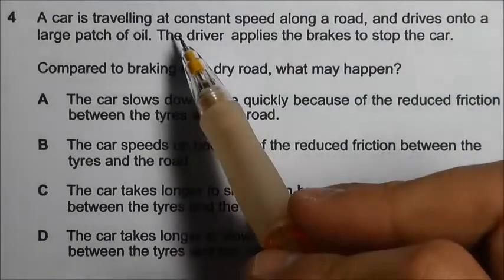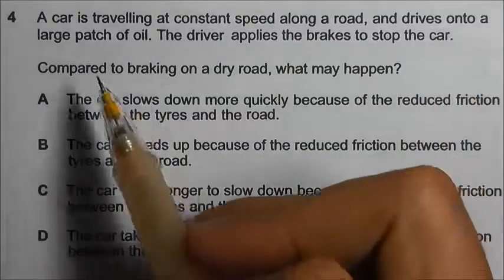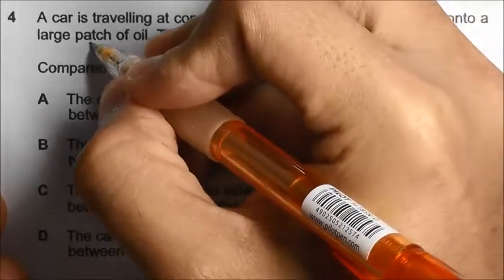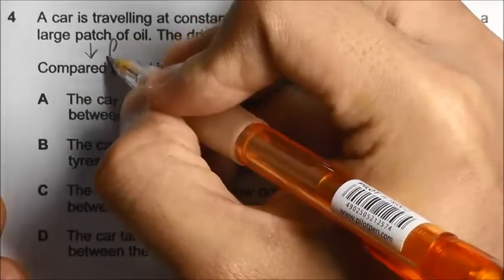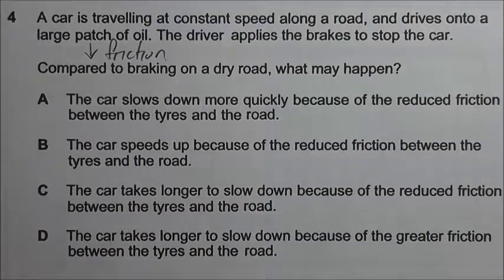A car is traveling at constant speed along a road and drives onto a large patch of oil. What the oil does is that it will decrease the friction between the tire and the road.